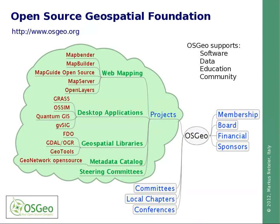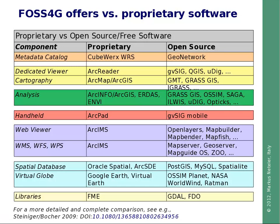Looking at what OSGeo offers compared to proprietary software, in this table you can see on the left side the different components — from metadata catalogs to dedicated viewers, cartography tools, GIS analysis, handheld and mobile, web services and viewers, spatial databases, virtual globes, and libraries. In the center column are proprietary products, and on the right side open source alternatives. For each proprietary product there is at least one open source product available, often several to choose from. A more complete and detailed comparison has been published as a scientific article.